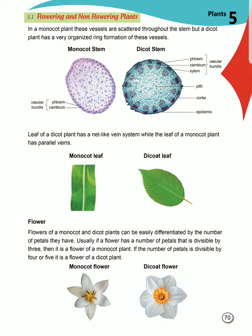If we talk about monocot leaf and dicot leaf, a dicot plant has a net-like vein system, whereas the leaf of a monocot plant has parallel veins. Their leaf structures are also different from each other, as you can see in the pictures.